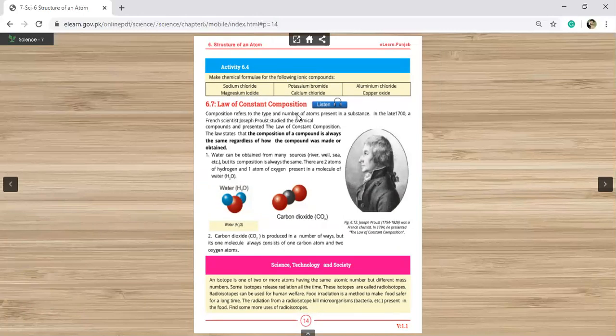Composition refers to the type and number of atoms present in a substance. In the late 1700s French chemist Joseph Proust studied the chemical compound and presented the law of constant composition. The law states that the composition of the compound is always the same regardless of how the compound was made or obtained. Any compound of composition is always the same.